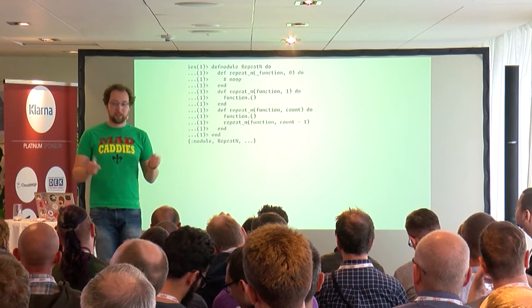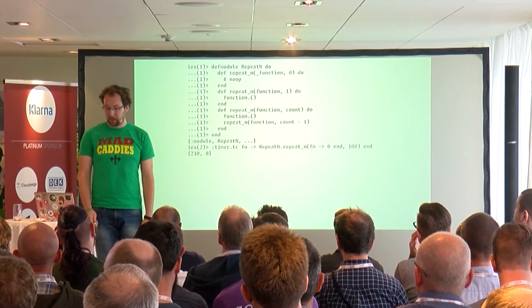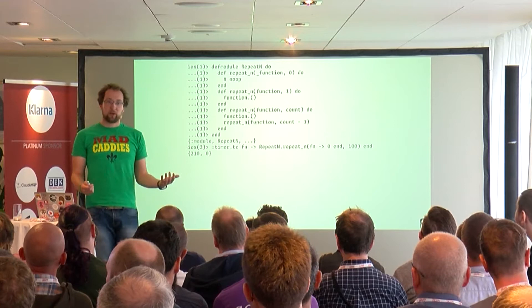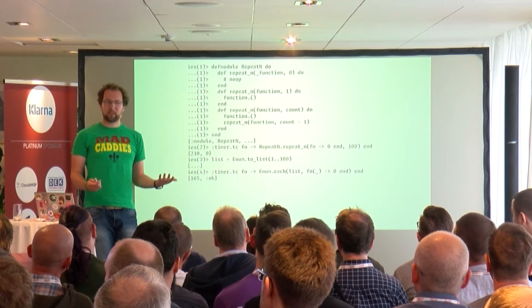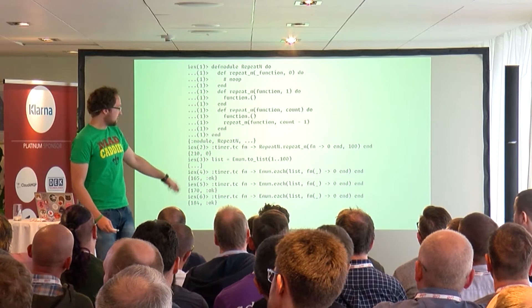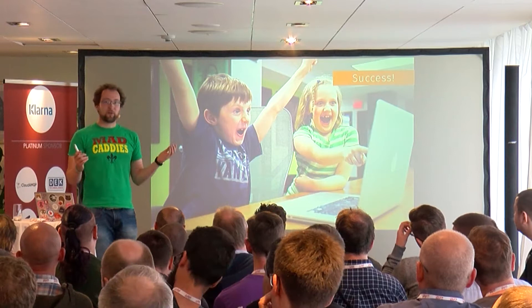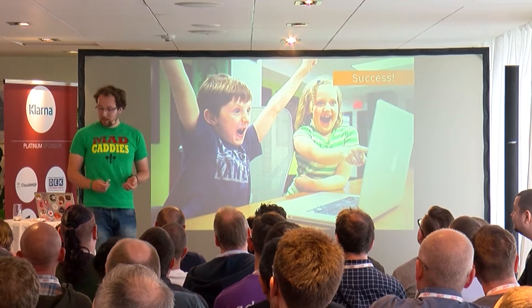Now we find the timer function in Erlang and we measure it. It takes 210 microseconds. But what about if I just do a plain old enum each on some list? Oh, 165 microseconds — that's faster! And people always say that tail recursion is so fast on the Erlang VM, so I'll try that a couple more times, and it's still faster. Success!